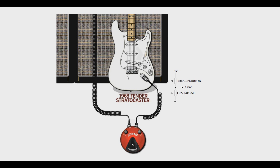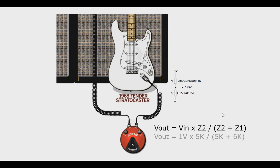If we hit a loud chord on a 60s Fender Stratocaster on its bridge pickup, which has an impedance of around 6k, this chord will be at about one volt peak to peak. This will go into a 60s Arbiter Fuzz Face, which has a low impedance of about 5k. To solve this voltage divider, we go voltage in times Z2 over the sum of Z1 plus Z2, which is 1 volt times 5k over 11k, which equals 0.45 volts, or 450 millivolts.